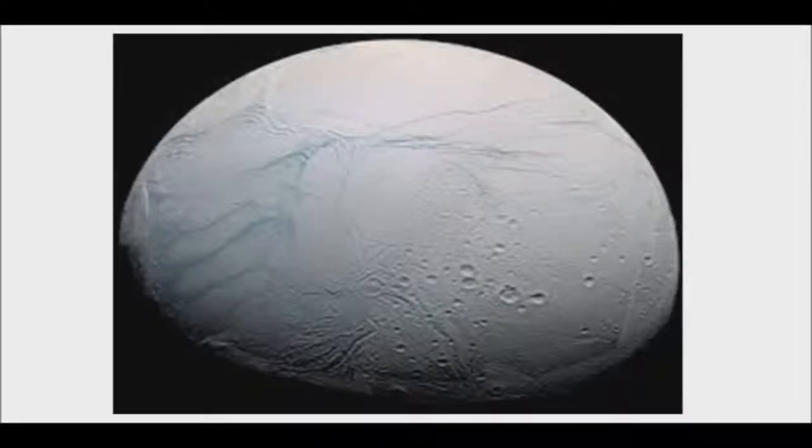Thanks to Cassini, we know about Enceladus's ocean and the types of gases, salts, and organic compounds that are present there. Studying how the plume composition changes can teach us yet more about the ocean and everything in it.